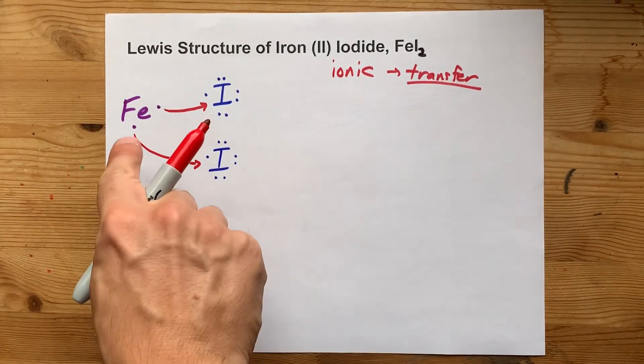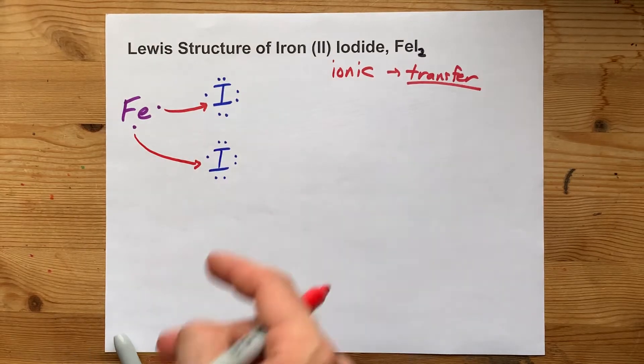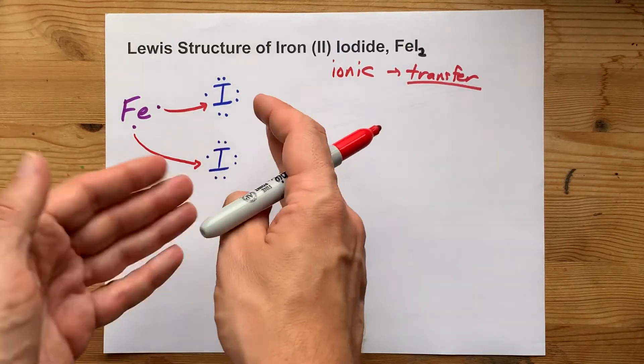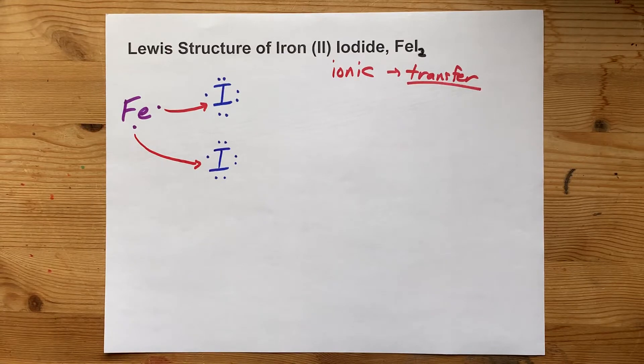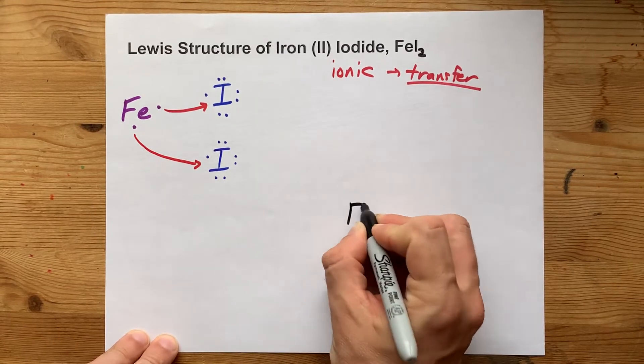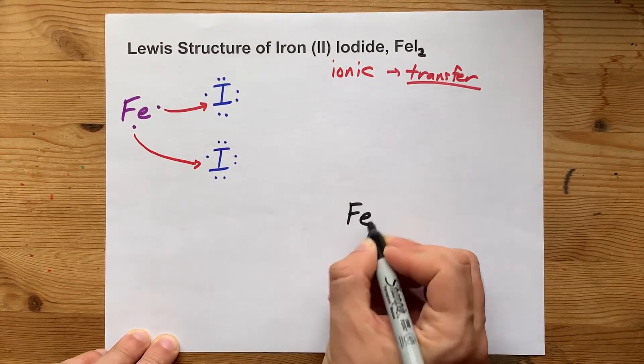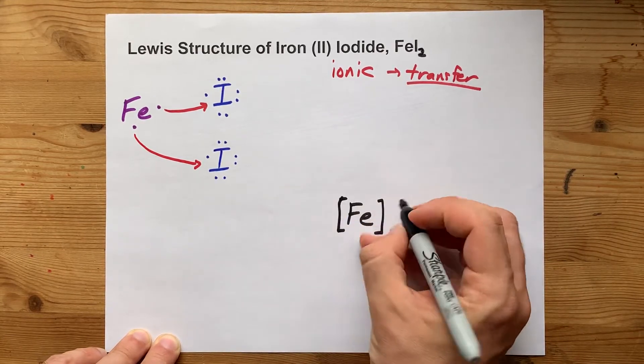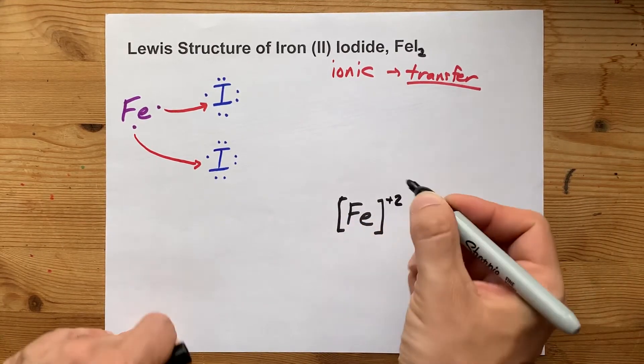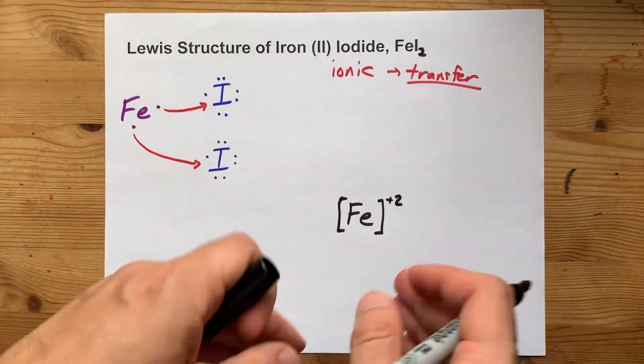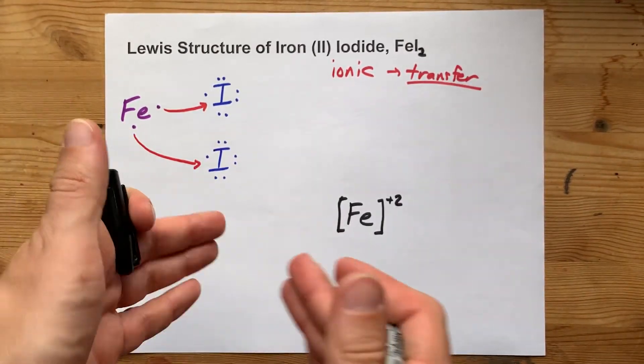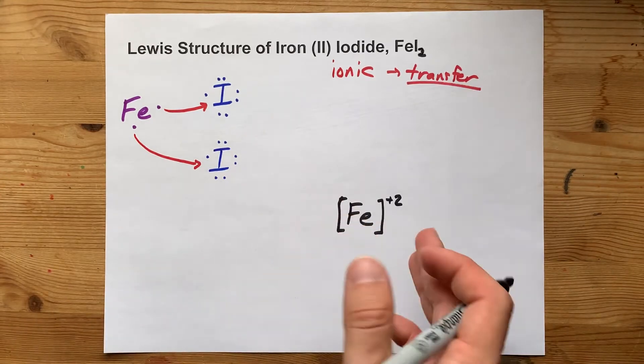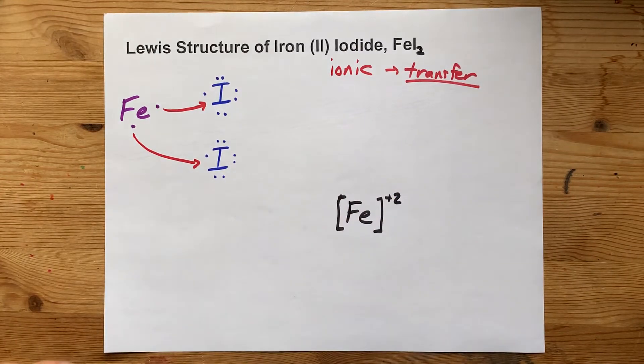Now, the iron's given away both of its electrons, and each of the 2 iodines have absorbed 1 each. So your final structure here has the Fe with no dots around it because it gave away its 2 electrons and a positive 2 charge because it gave away its 2 negatively charged electrons. Giving away 2 negatives gives you a positive charge.